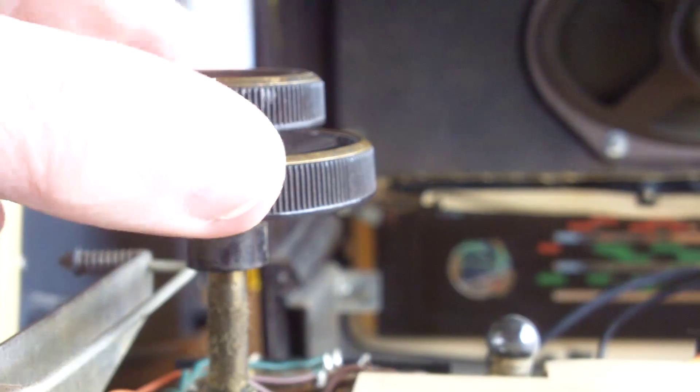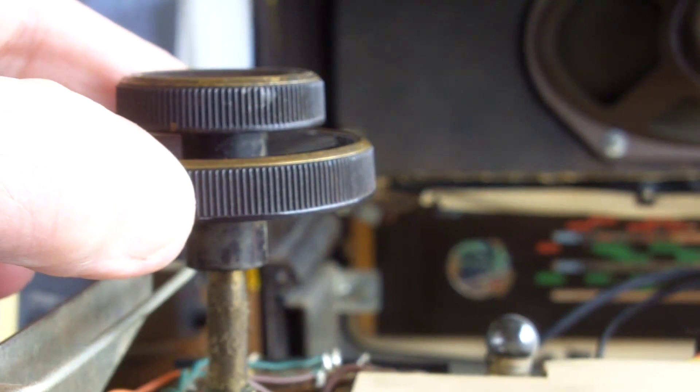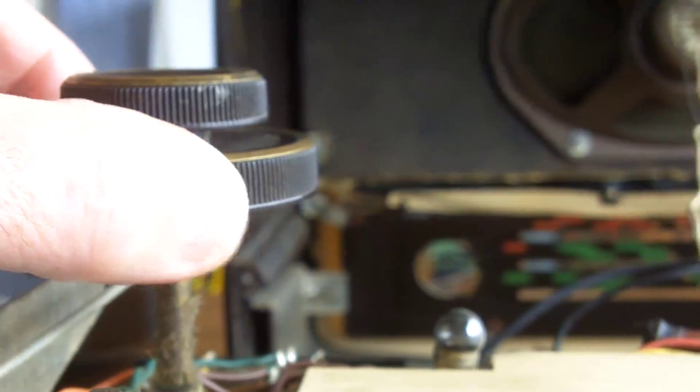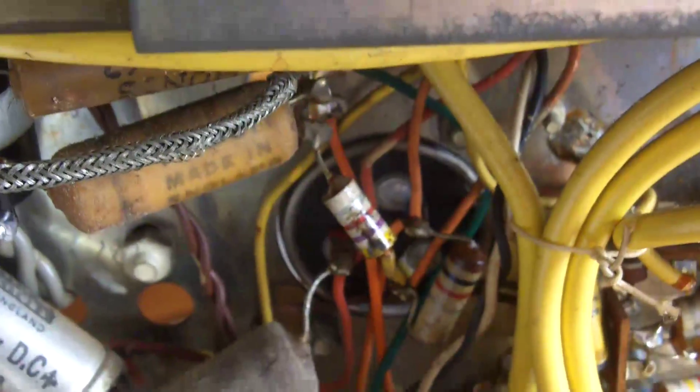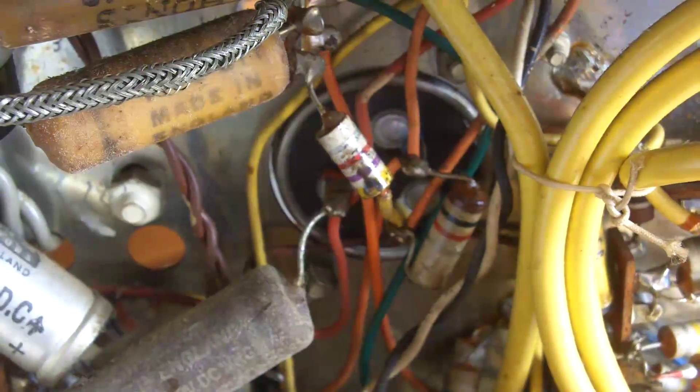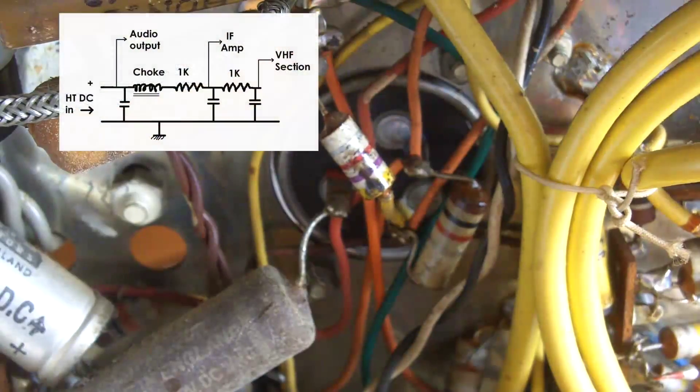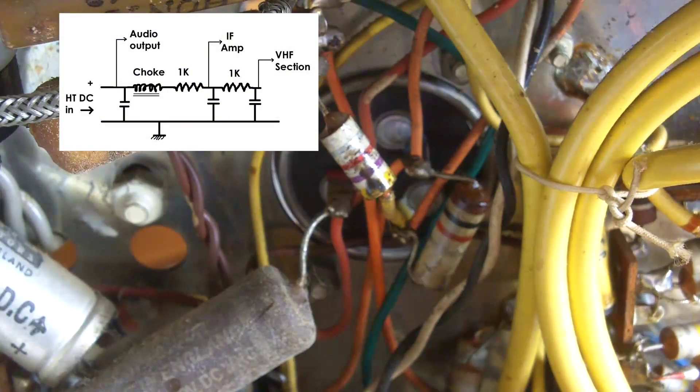I've got the radio set on a VHF wave band. I'll just turn that off now. And I've set it to VHF because the first two valves in the VHF section get disconnected when you select the long and medium wave channels.